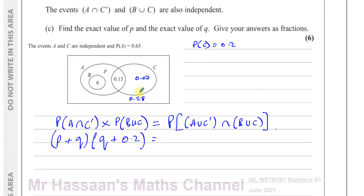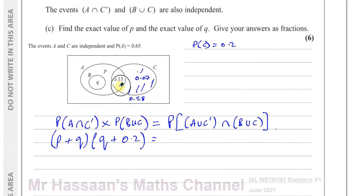The intersection of (A ∩ C') and (B ∪ C) — what is common between the crescent region (P and Q) and B ∪ C? The only common part is Q, since Q is inside B and also inside A but outside C.